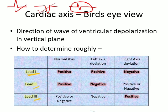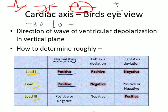When looking at the QRS complexes, determine if they are predominantly positive or predominantly negative deflections. If you see a QRS complex that is predominantly positive in Lead I and predominantly positive in Lead II, you can comfortably say that the axis is normal — that is, the axis lies between minus 30 to plus 90 degrees.